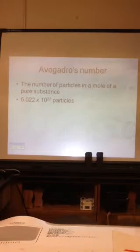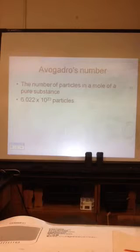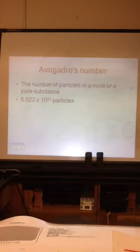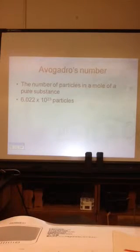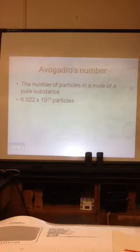Avogadro's number is the number of pieces in a mole of a substance. One mole of something is 6.022 times 10 to the 23rd pieces. You'll remember that number for the rest of your lives.